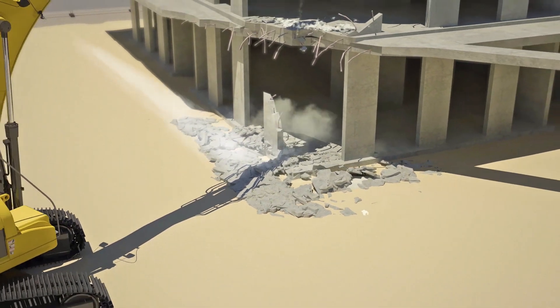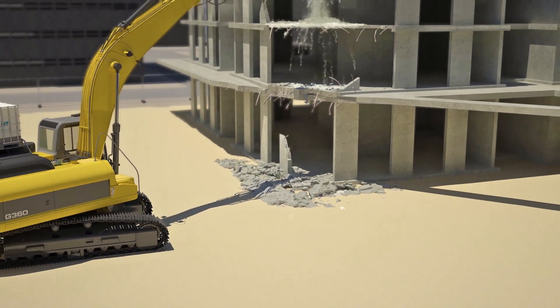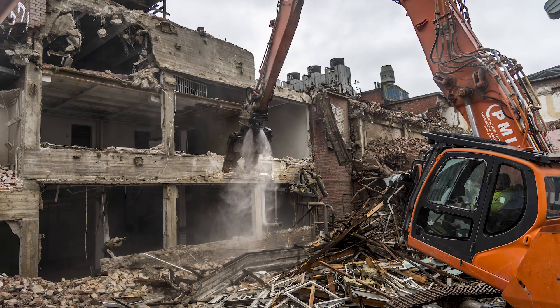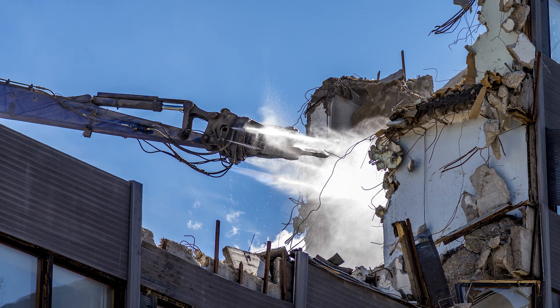When using Dynaset HBWDust, there's no need for other dust suppression equipment. The worksite has less emissions, water consumption is minimal, and the dust suppression won't wet the whole worksite.